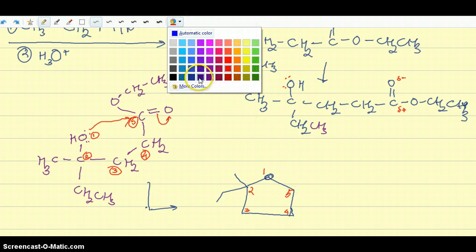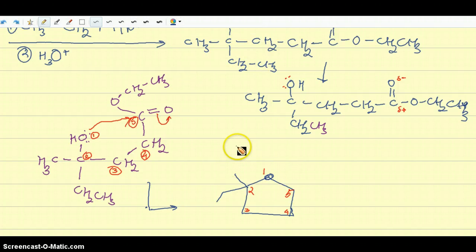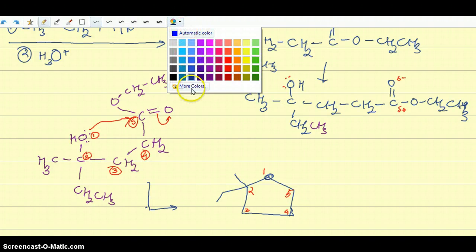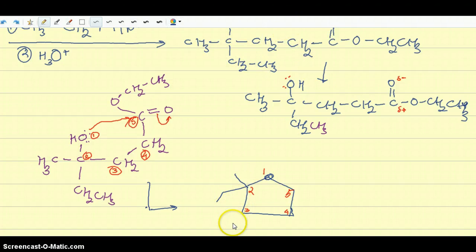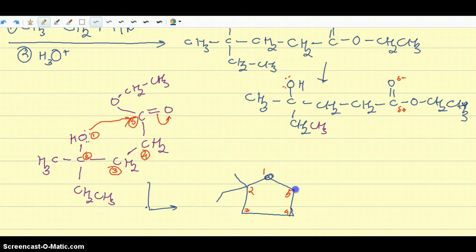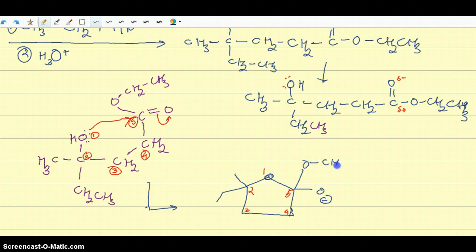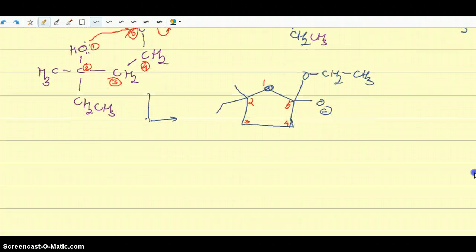Labeling atoms in every step is a great technique to not lose track of atoms and groups when drawing a complex mechanism. At atom number two you have one methyl and one ethyl group. Atom number three and atom number four have no substituents. After moving the electrons from oxygen, you form a kind of enolate — oxygen with a negative charge — in the cyclic intermediate.